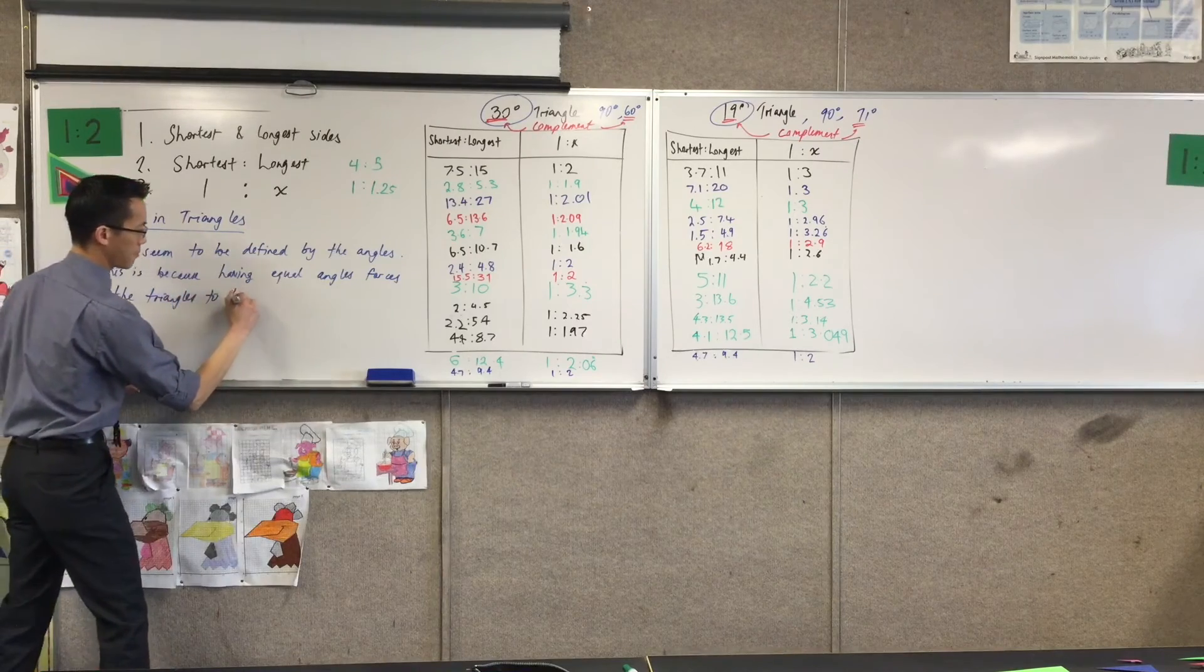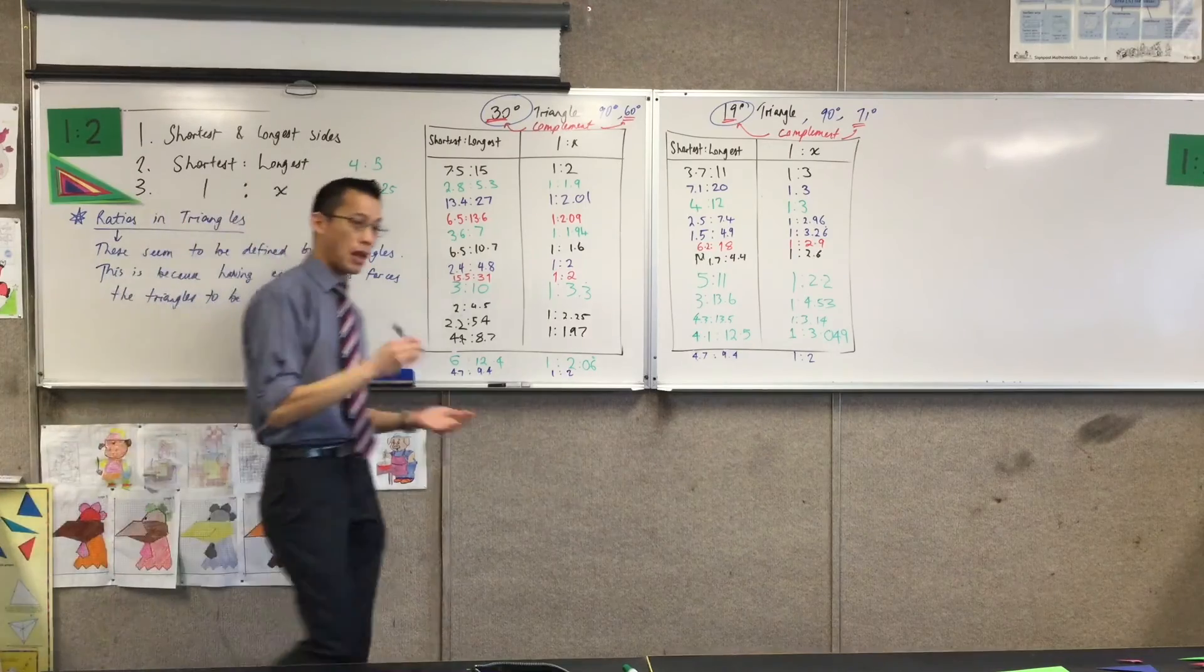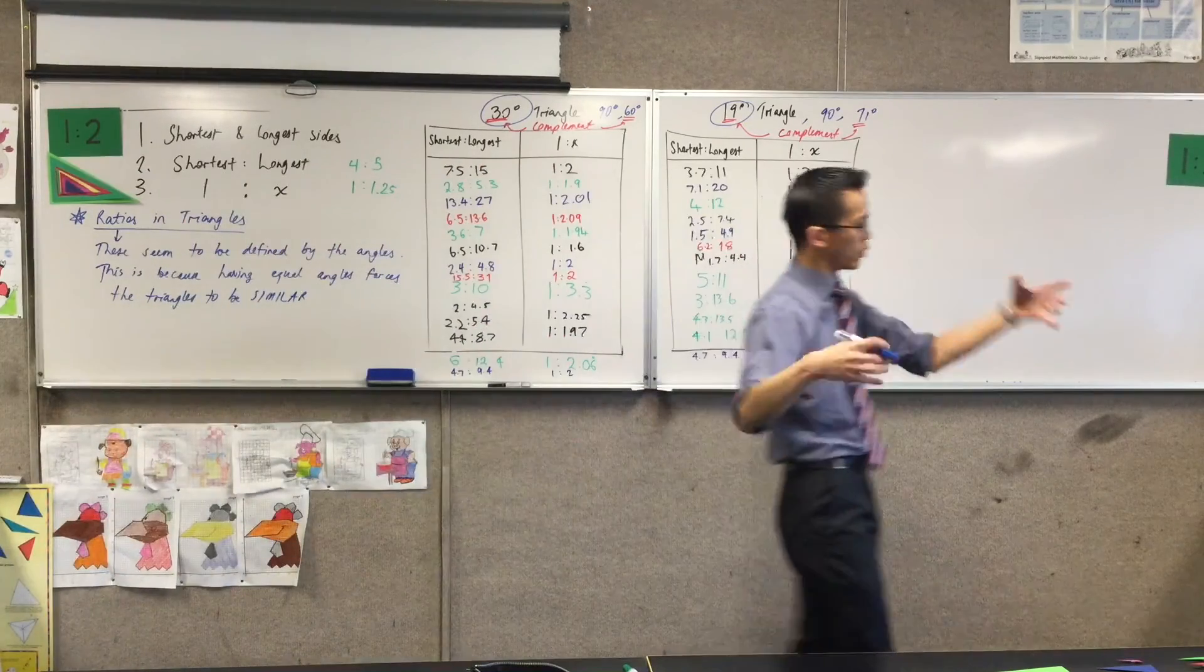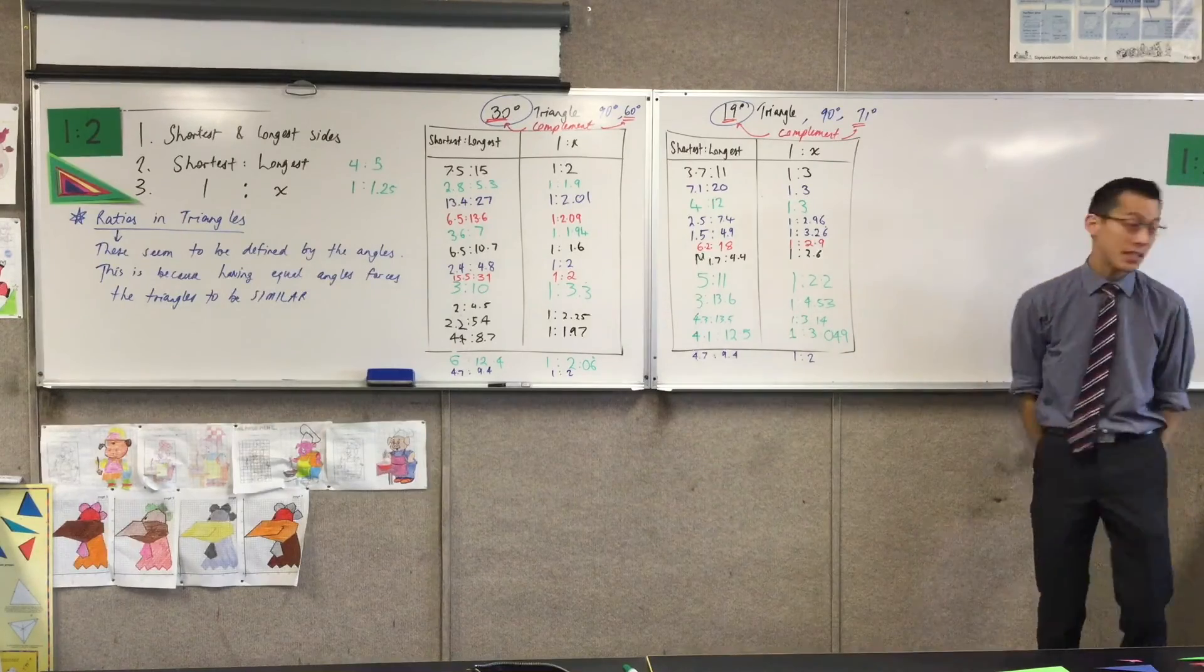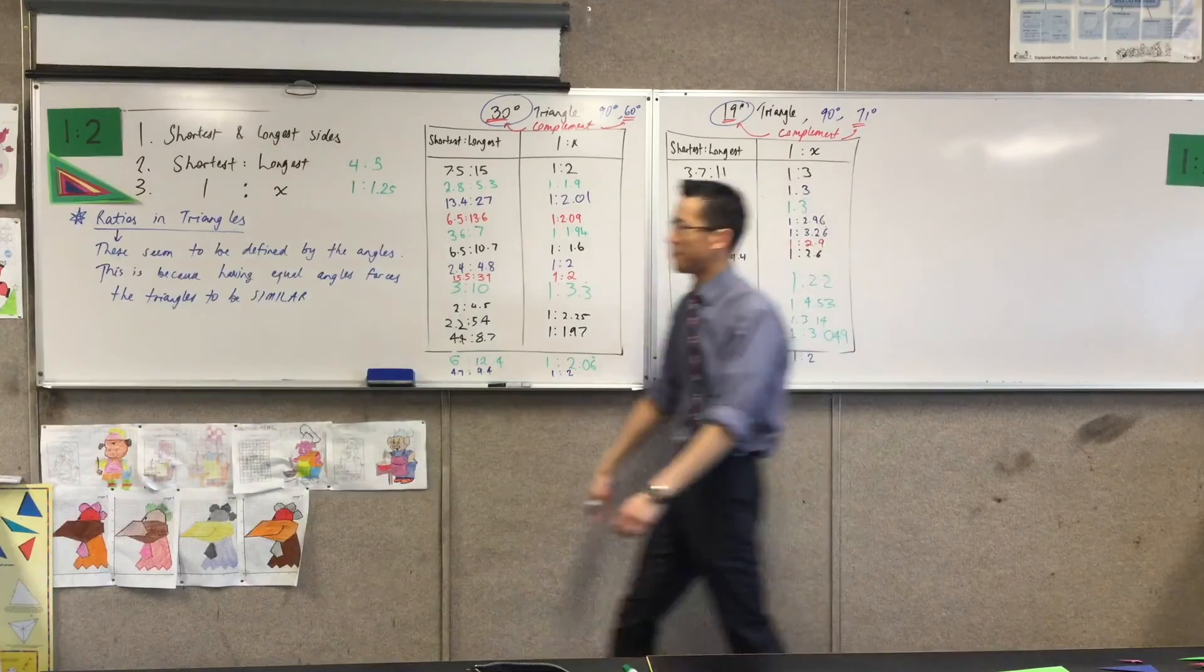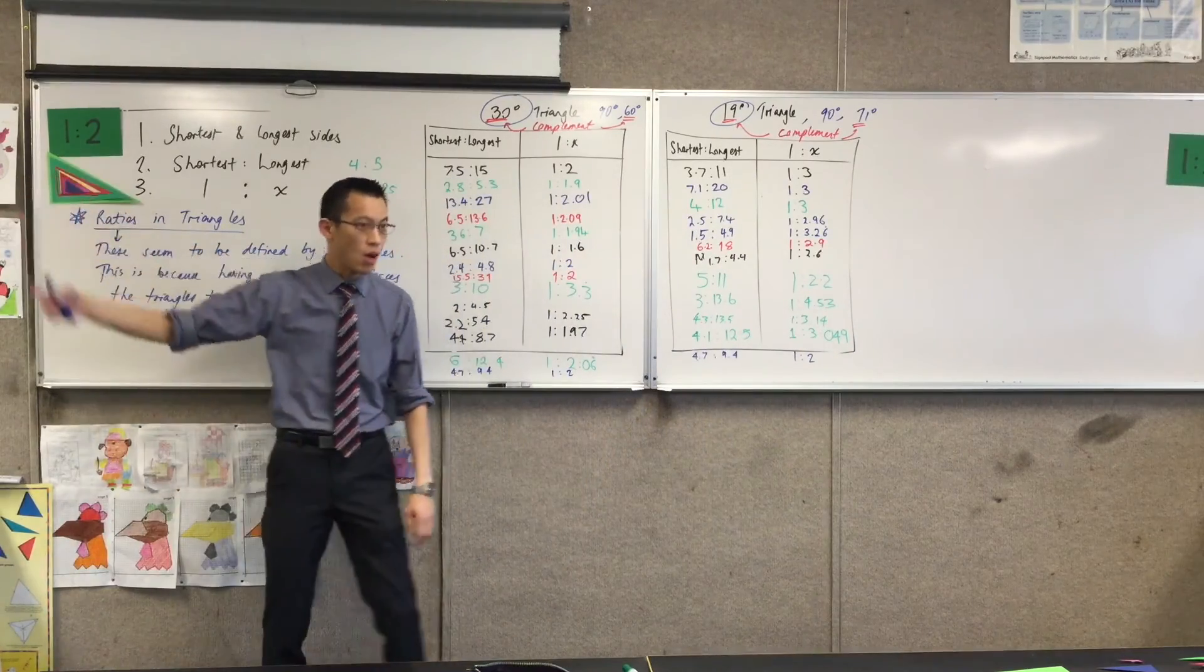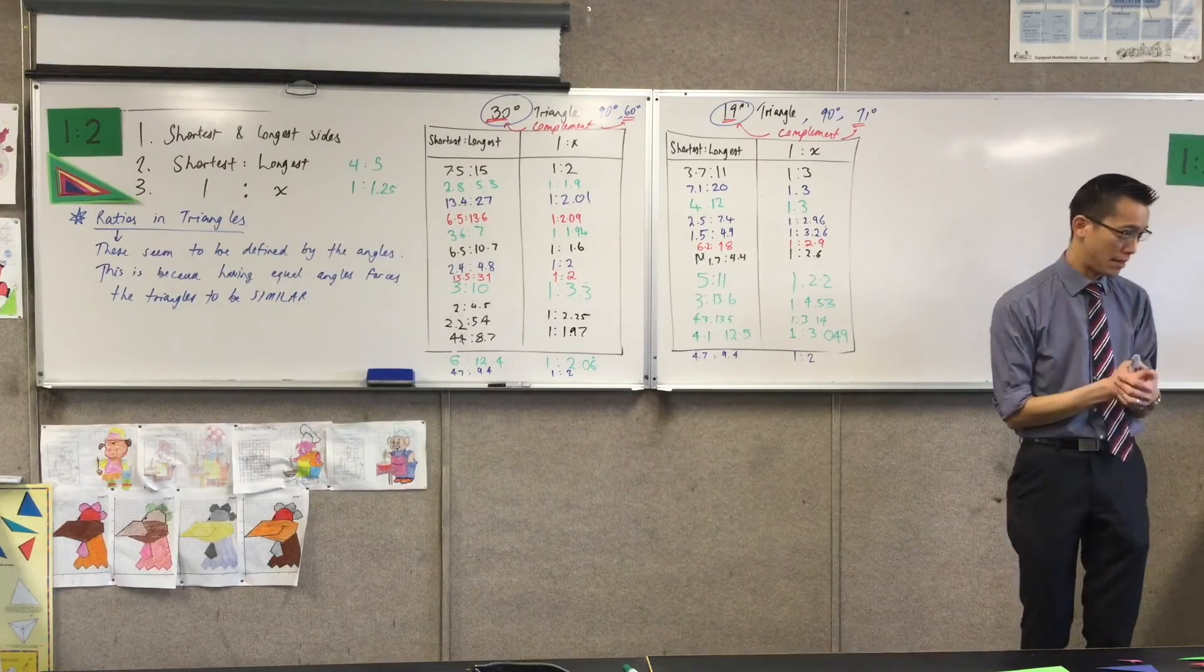having equal angles forces the triangles to be similar. They have to be, you can pick, in fact, any three angles you like that add up to 180 degrees, which will form a triangle. They don't have to be 30, 90, 60, or 19, 90, 71. Any three angles you like, and if you start doing this exercise again, and cutting out some more, they're all going to end up being similar to each other. They can't do anything else. They have to be.